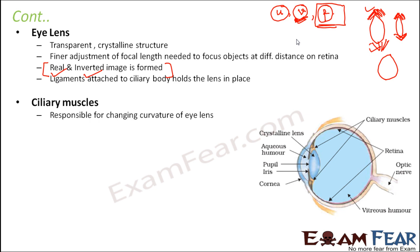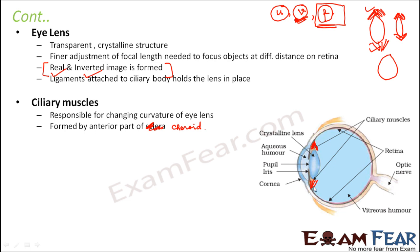The ciliary muscles are responsible for changing the curvature of the lens and thereby changing its focal length. They are formed by the anterior part of the choroid, which is the middle layer. So the front part of the middle layer forms the ciliary muscles, while the front part of the sclera forms the cornea.